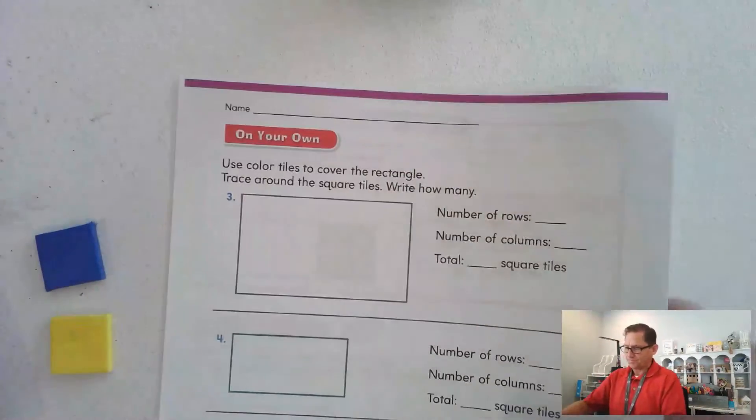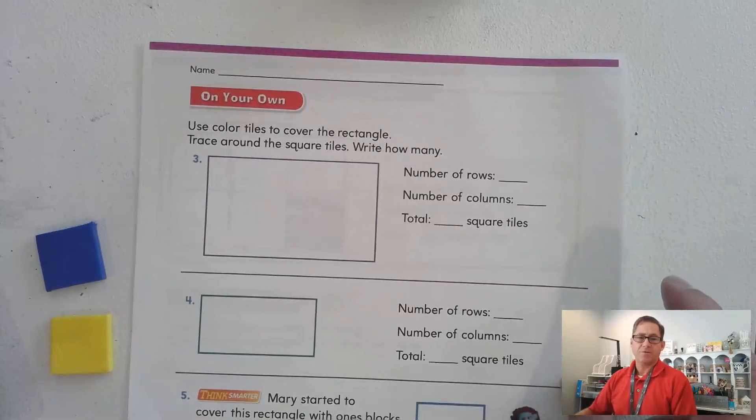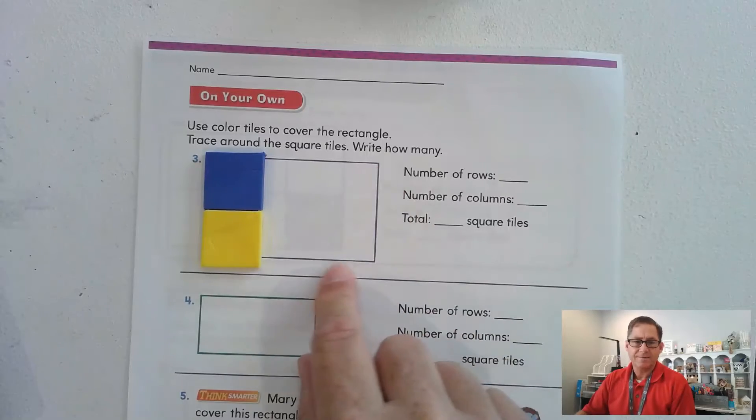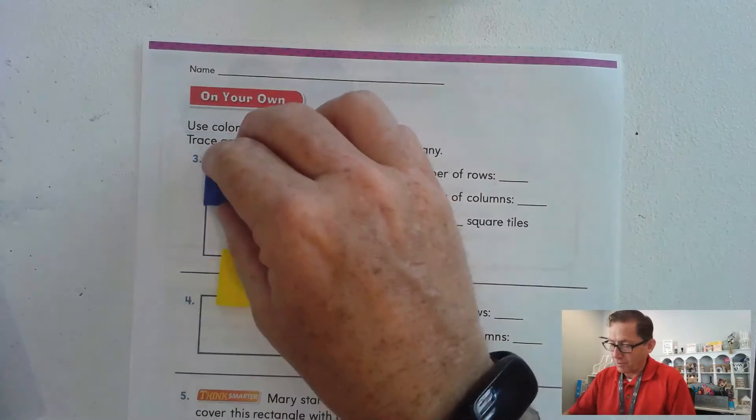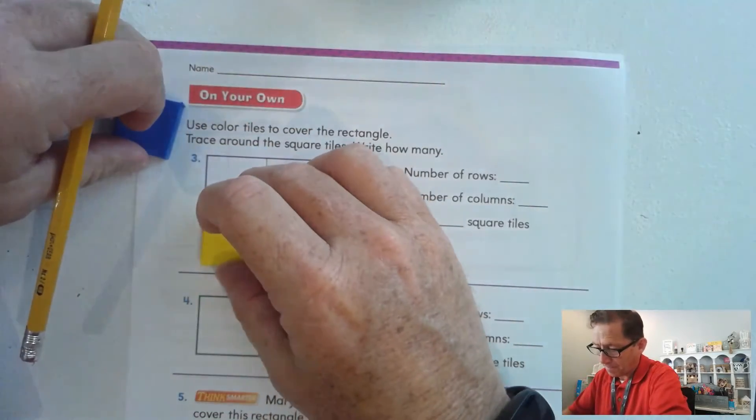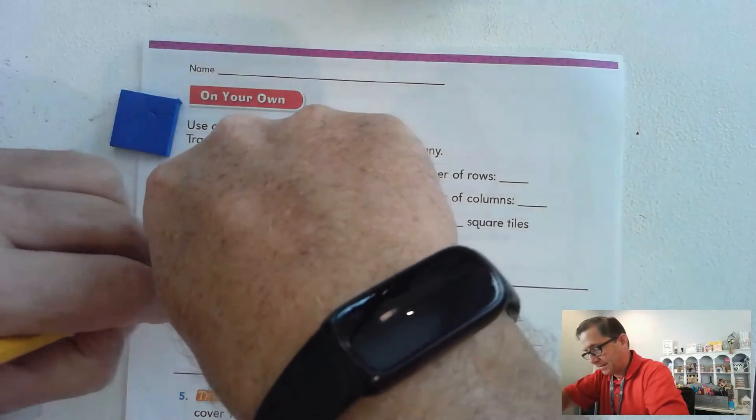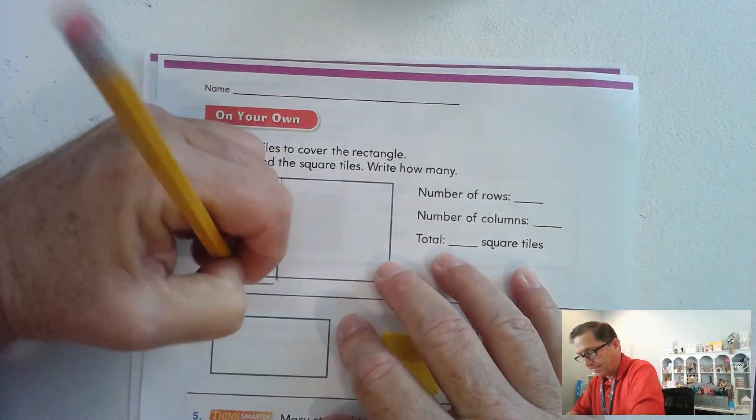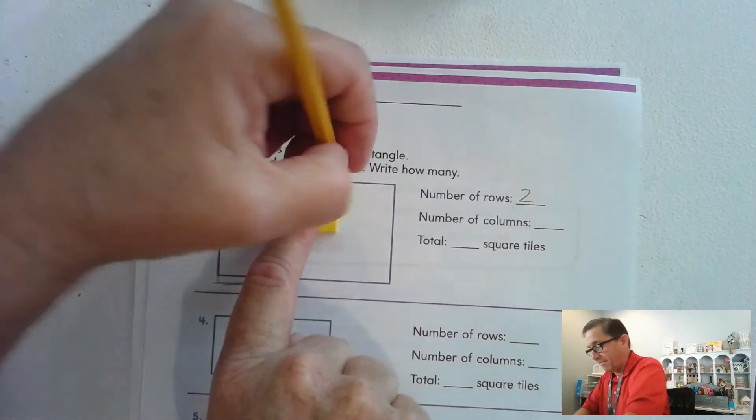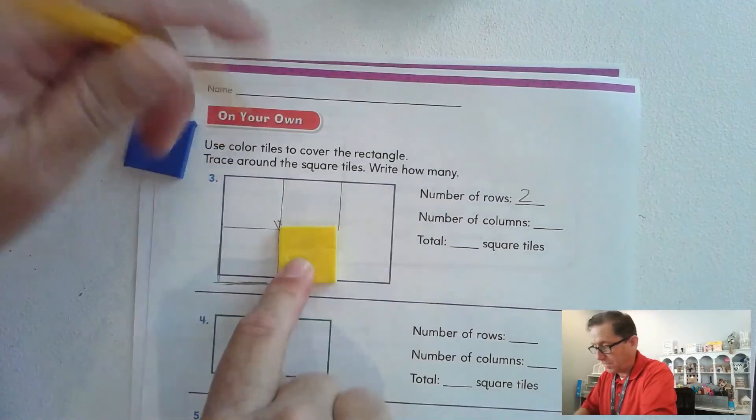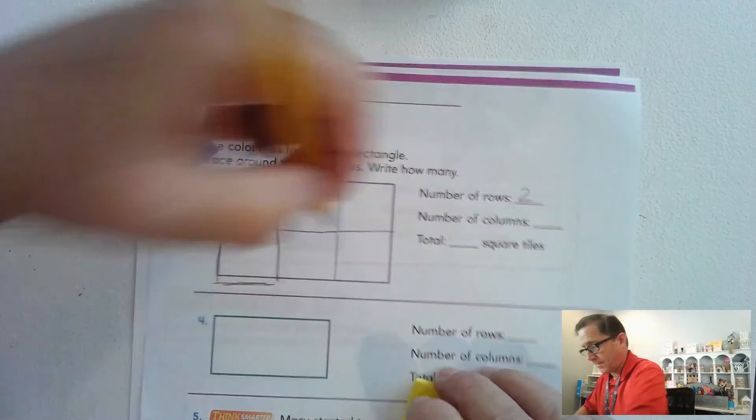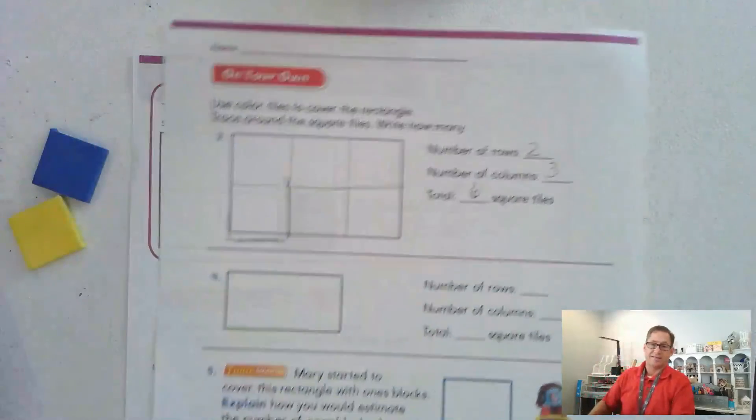Let's look at page 547. Use color tiles to cover this rectangle and trace around the square tiles and write how many. So I see one, two. Actually, the drawing in here, they didn't make the rectangle large enough. So I'm going to go ahead and call it two rows. But it does extend past the drawing. So I'm going to say two rows. And how much do I have in each row? It looks like I'm going to have three in each row. So we have two rows of three for a total of six square tiles.